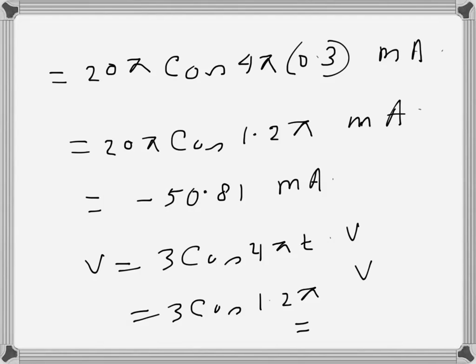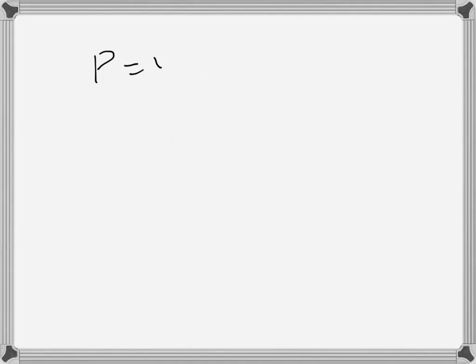So the value is approximately minus 2.42 volts. Then the power, of course, will be the product of v and i, so we get something like 123.6 milliwatt. The second question is: what is the energy delivered to the element within 0 to 0.6 seconds?